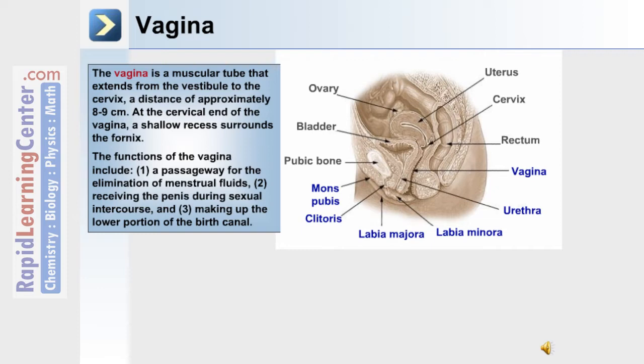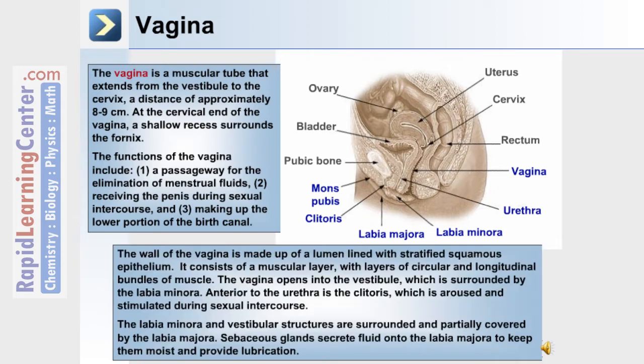Number two, during sexual intercourse, it receives a penis. And number three, it makes up the lower portion of the birth canal.